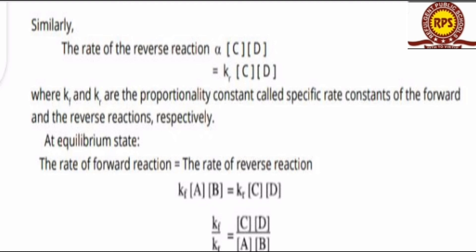At equilibrium state, the rate of forward reaction is equal to the rate of reverse reaction. So KF multiplied by [A][B] is equal to KR multiplied by [C][D].